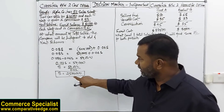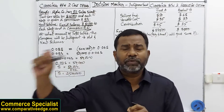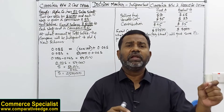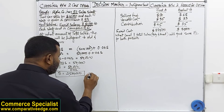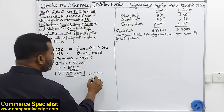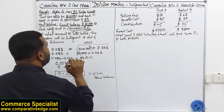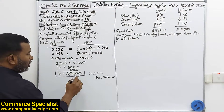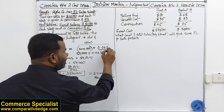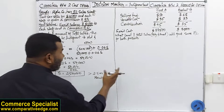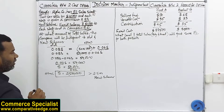This sales level of 2.5 million is the indifference level — at this point, whether you pay only 8% commission or a fixed salary plus 6% commission, the company's cost is the same. If your sales level is greater than 2.5 million, you should use the new scheme, because the variable commission rate is only 6%, saving you more on higher sales than the 8% old scheme.